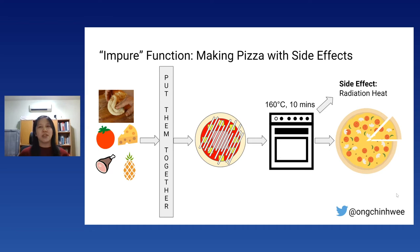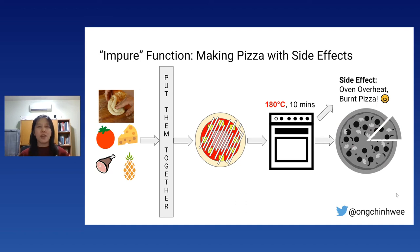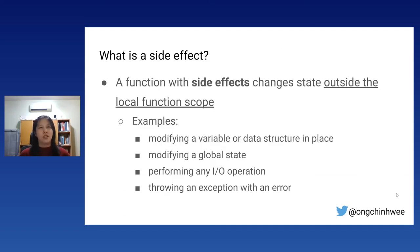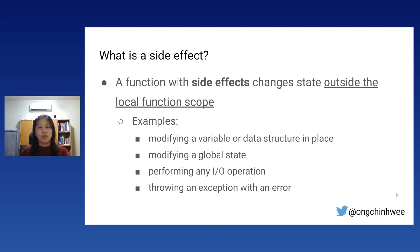In reality, making pizza is an impure function — side effects are inevitable. Side effects could include radiation heat from the oven or the oven cooking at 180°C when set to 160°C, resulting in a burnt pizza. Formally, a function with side effects changes something outside the local function scope — such as modifying a variable in place, modifying global state, performing IO operations, or throwing an exception.